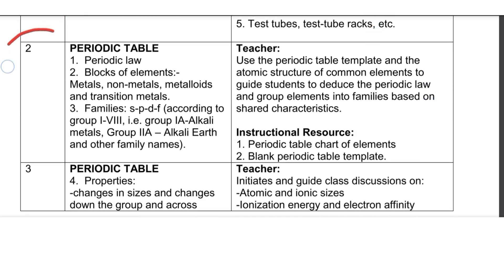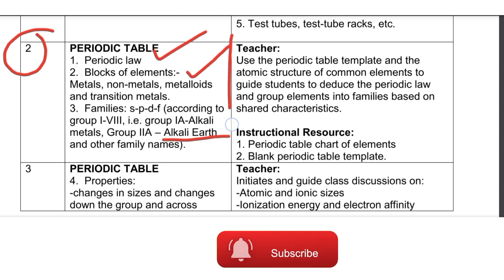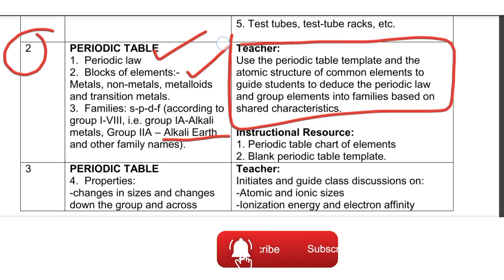For week two, you'll be learning about the periodic table — the periodic law, and the blocks of elements: the s-block, p-block, d-block, and f-block. You'll also cover the properties of the s, p, d, and f blocks and groups of elements, including alkali metals, alkaline earth metals, and other families of elements. These are the key points you must understand.